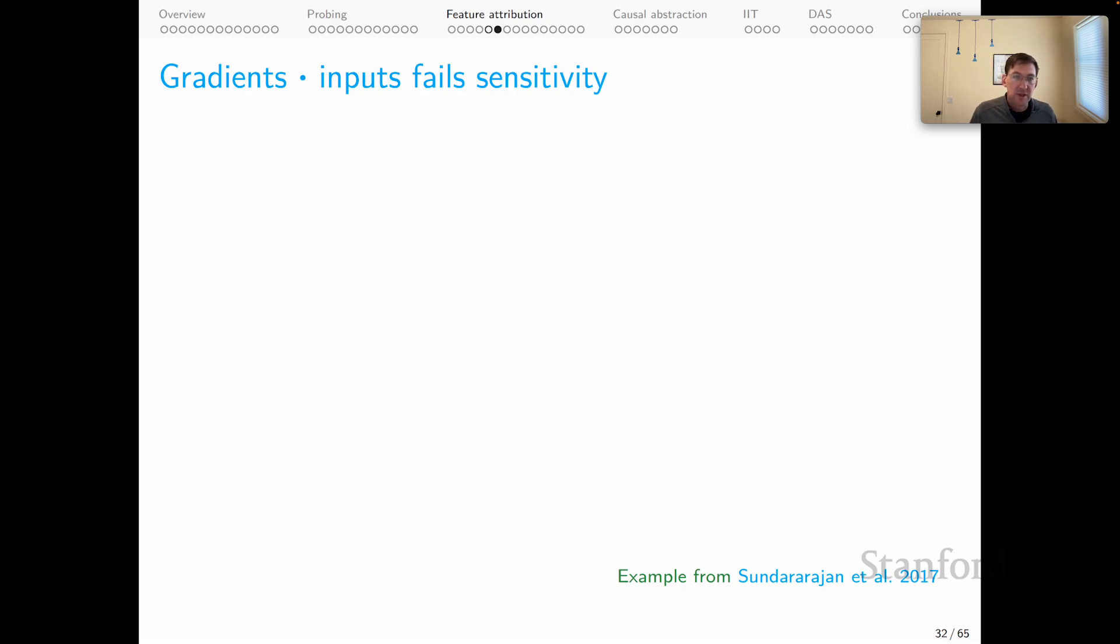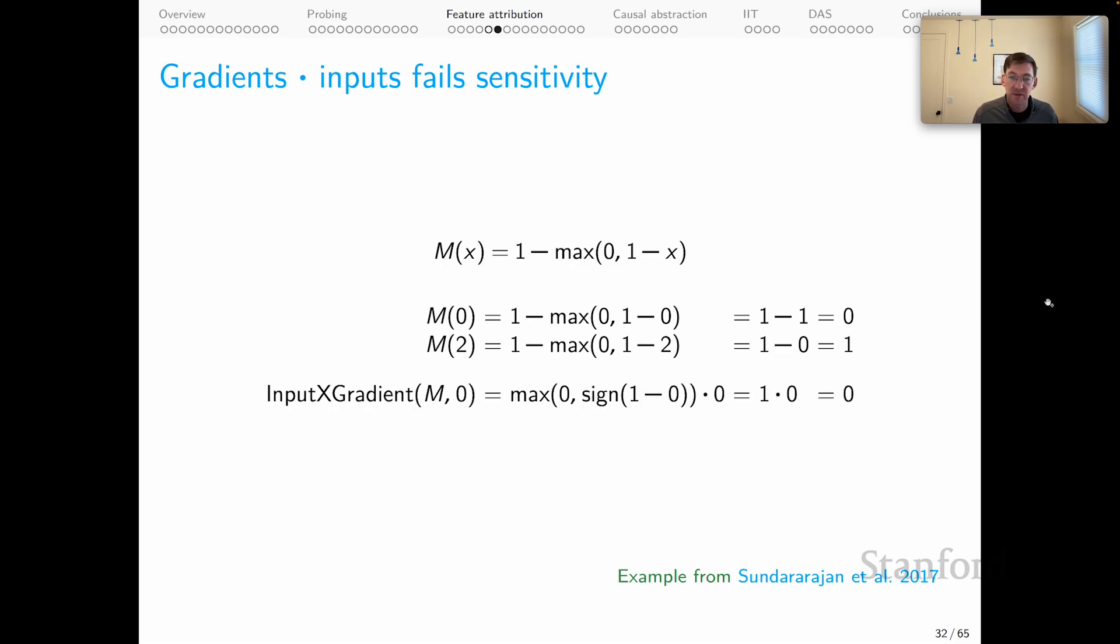Here's the fundamental sticking point for gradients by inputs. It fails that sensitivity axiom. This is an example, a counterexample to sensitivity that comes directly from Sundararajan et al. 2017. We have a very simple model here, M. It takes one-dimensional inputs, and what it does is one minus the ReLU activation applied to one minus the input. Very simple model. When we use the model with input zero, we get zero as the output. When we use the model with input two, we get one as the output. So we have a difference in output predictions. These are one-dimensional inputs, so we are now required by sensitivity to give non-zero attribution to this feature. But sadly, we do not. When you run input by gradients on this input, you get zero. And when you run input by gradients on input two, you also get zero. And that is just a direct failure to meet the sensitivity requirement. So that's a worrisome thing about this baseline method. It cues us up nicely to think about how integrated gradients will do better.